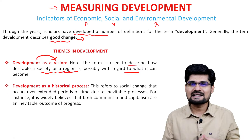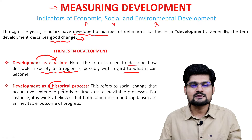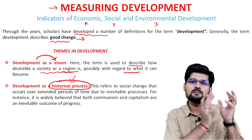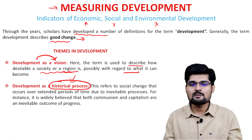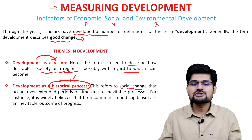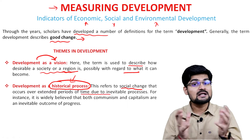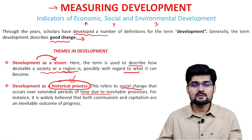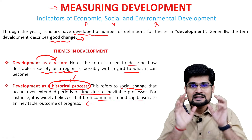The second theme in development is development as a historical process. We have been talking about the process of development since the past till the present. Historical processes refer to social change and economic change over time periods due to many processes that happened. Here we talk about communism, capitalism and several other '-isms' in this kind of development theme.